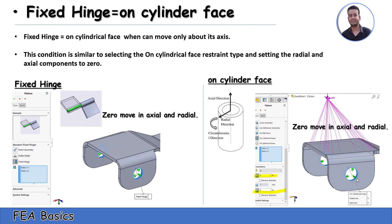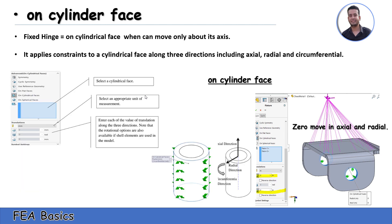Fixed hinge is applied to a cylindrical face, meaning the body can rotate about its axis. The on-cylindrical-face fixture is equal to fixed hinge when the body can only move about its axis. However, with on-cylindrical-face you can also constrain the cylindrical face along specific directions including axial, radial, and circumferential.